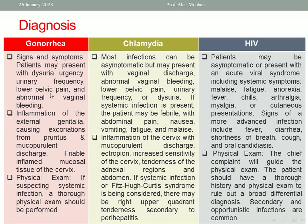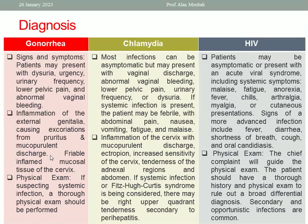For gonorrhea, patients usually present with dysuria, urgency, urinary frequency, lower pelvic pain, and abnormal vaginal bleeding. On speculum examination, there is mucopurulent discharge, the cervix is inflamed, friable, and there is pruritus of the external genitalia with irritation due to the mucopurulent discharge.